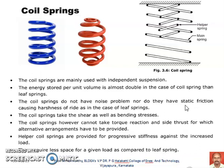In leaf springs, multiple leaves are stacked one above the other and whenever load is taken there is relative motion between the leaves, which may cause squeaking noise. There are also chances for dust entering between the leaves, creating more noise in bad weather. Whereas in coil springs such noise problems are eradicated. Coil springs take both shear and bending stresses, whereas leaf springs are mainly designed for bending stresses. However, coil springs cannot take torque reactions and side thrust, for which alternative arrangements need to be provided.